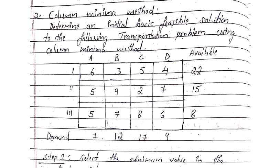In the row minimum method, we used to select the minimum value in a row and allocate units to that cell by comparing demand and supply. The only difference between row minima and column minima is: in row minima we select the minimum value in a particular row, whereas in column minimum method, as the name itself suggests, we select the minimum value in a particular column.